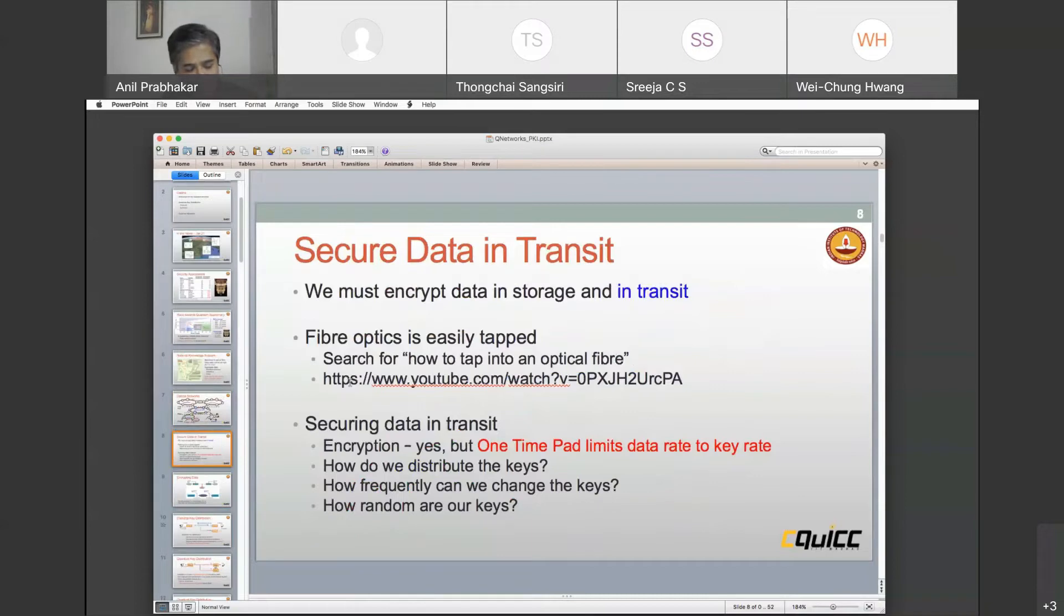Each of these things are potential places where someone could eavesdrop and compromise our data security. A lot of data is encrypted in storage, but not as much in transit. Fiber optics is easily tapped. If you search for how to tap into an optical fiber on YouTube, you'll get videos that show you how it can be tapped.